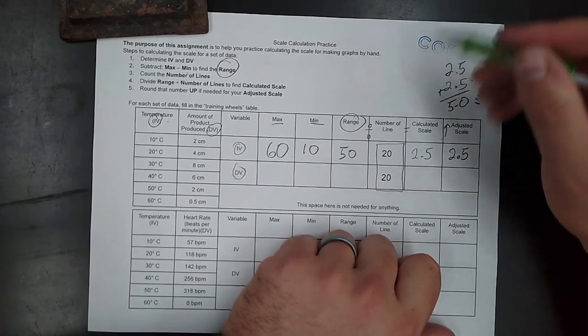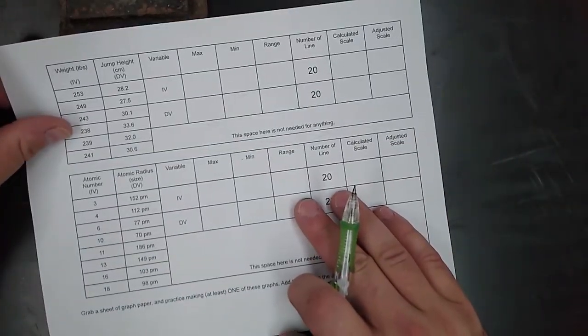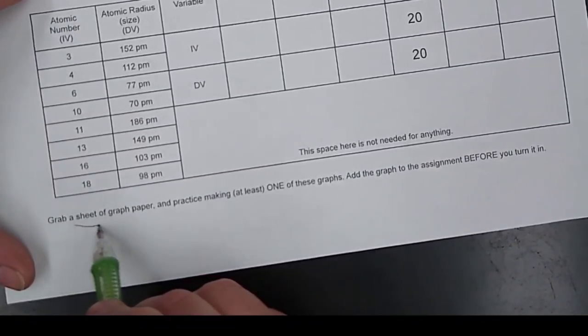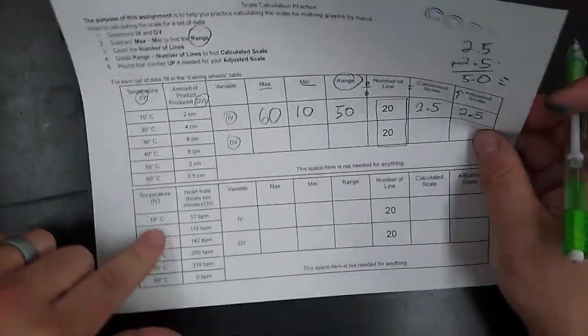That would be super easy to tick along. You'll do 1, 2, flip it over, 3, 4 charts. Then you're going to pick one of these sets of data. Pick just one of them and make a graph of it.